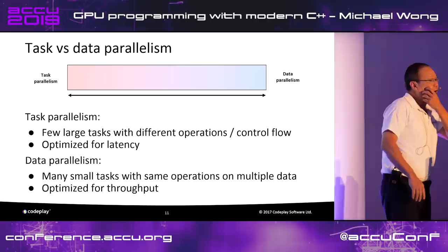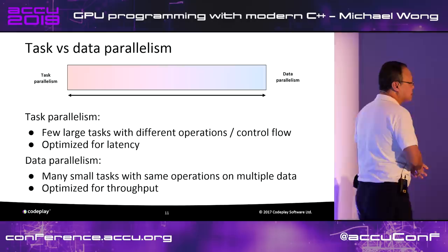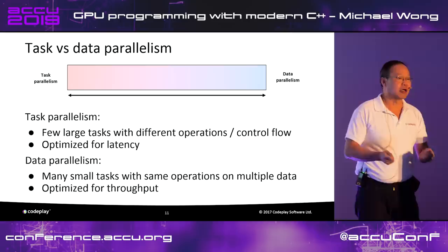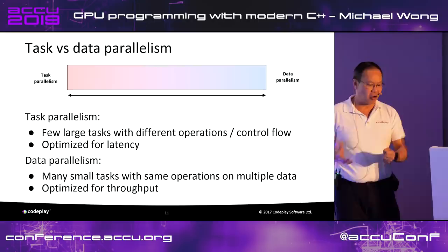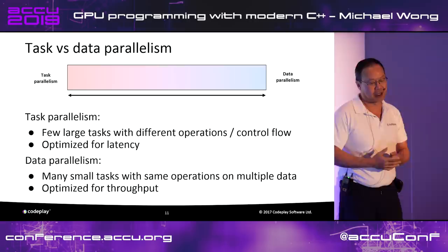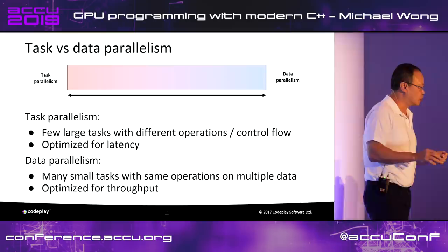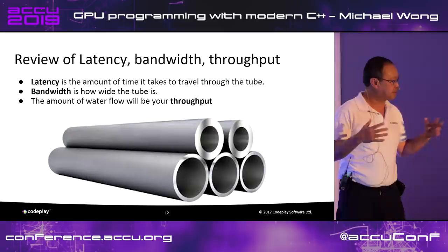Let's do a crash course on task versus data parallelism. The key idea is to maximize hardware utilization and reduce dependencies. Task parallelism usually involves a few large tasks with different operations — it's about control flow and optimizing for latency. Data parallelism involves many small tasks with the same operations on multiple data, and in these cases you optimize for throughput.